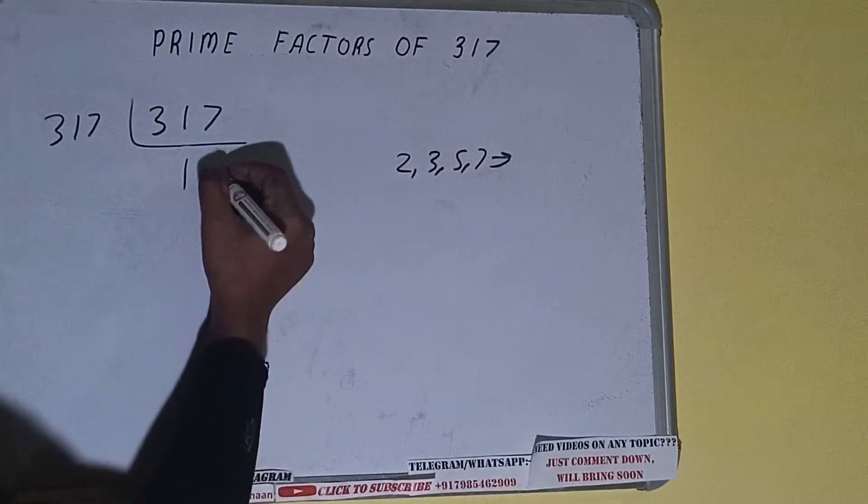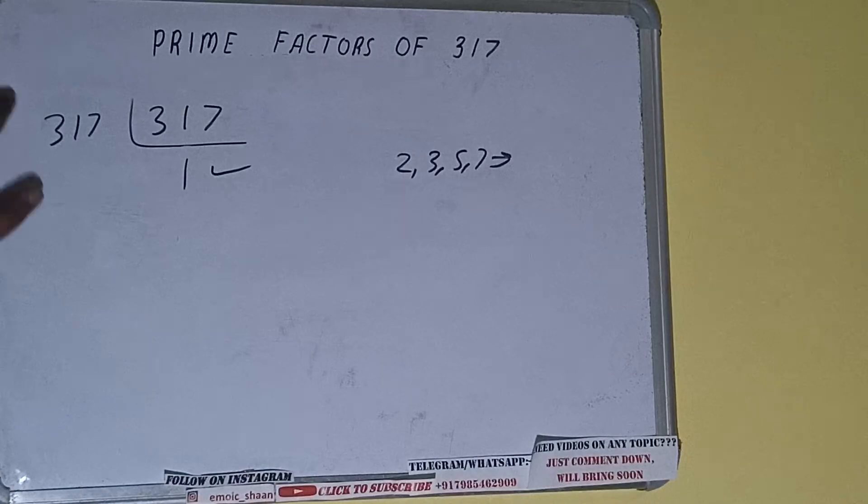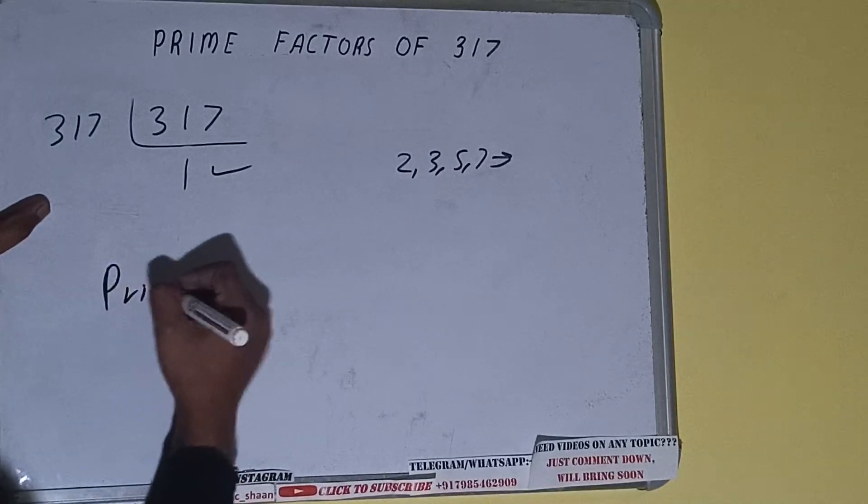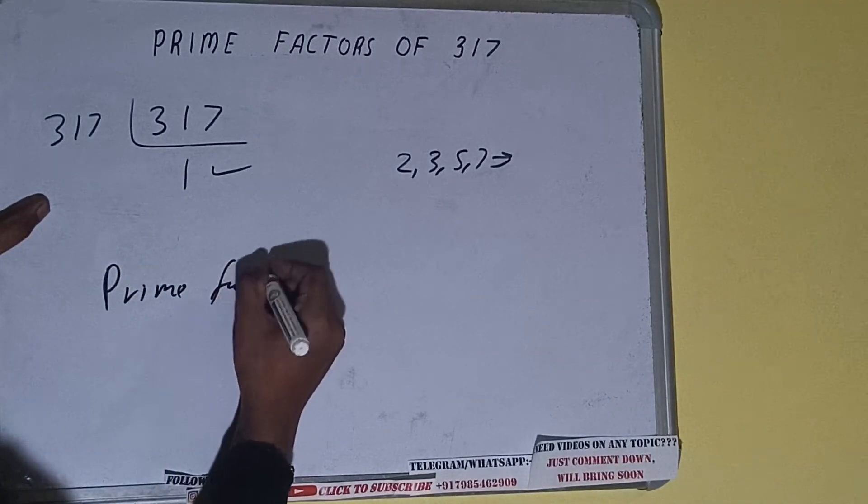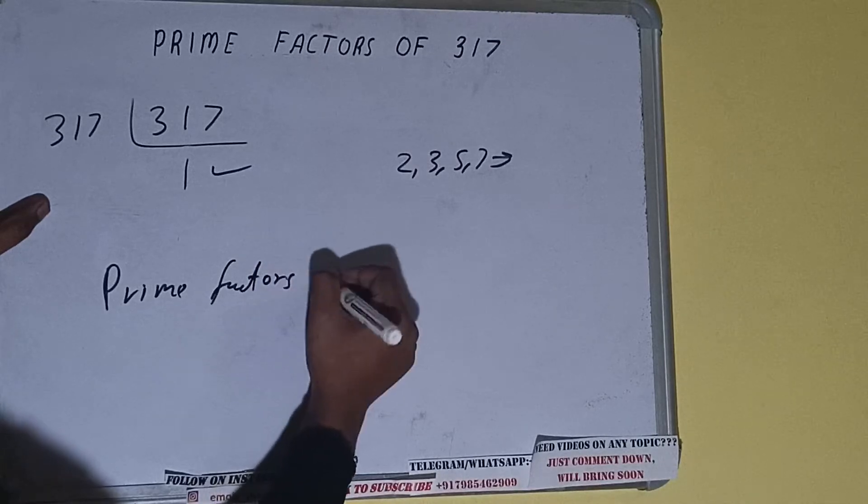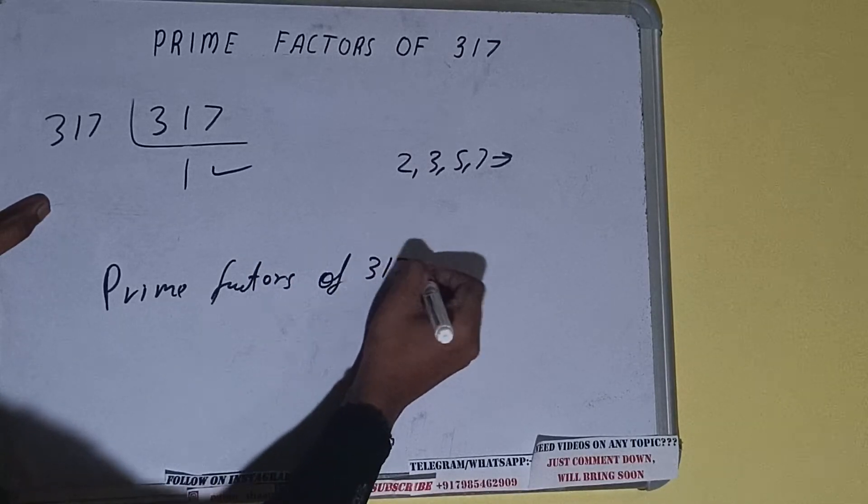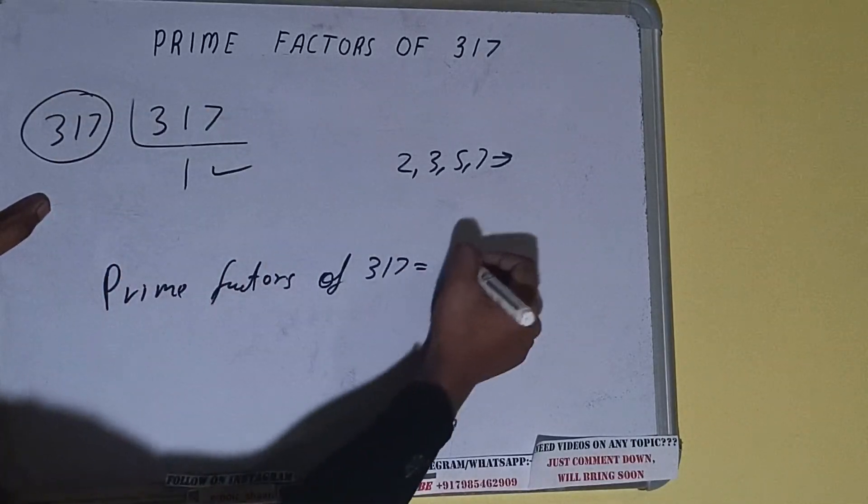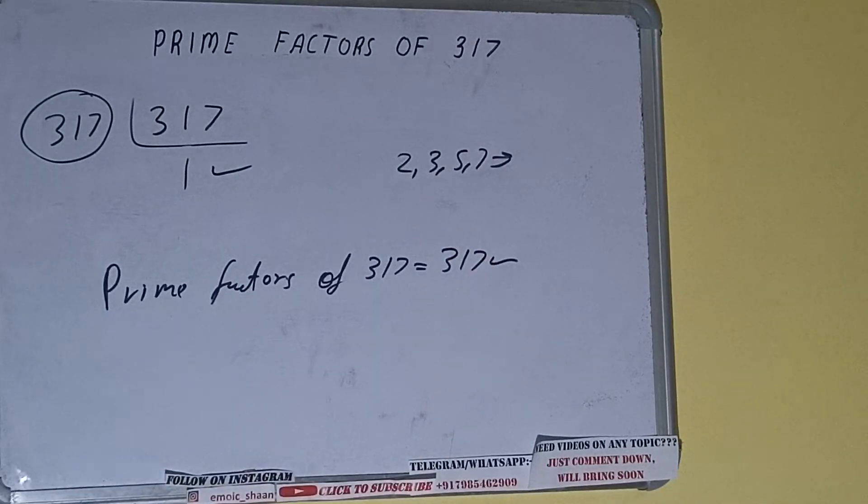Once we get 1 we need to stop and do one last thing, that is prime factors of 317 equals to whatever is on the left hand side, that is 317. That will be the answer.